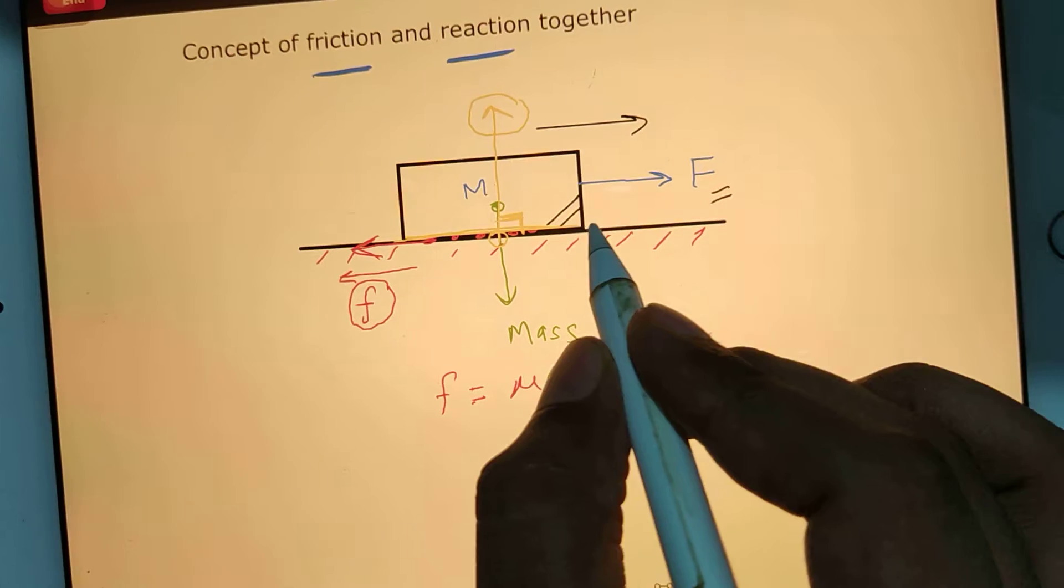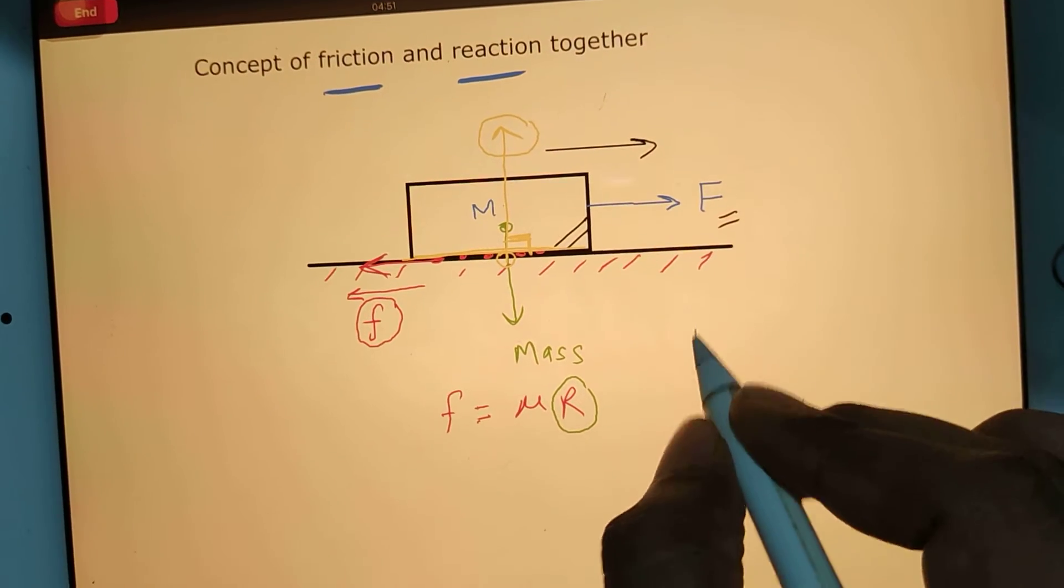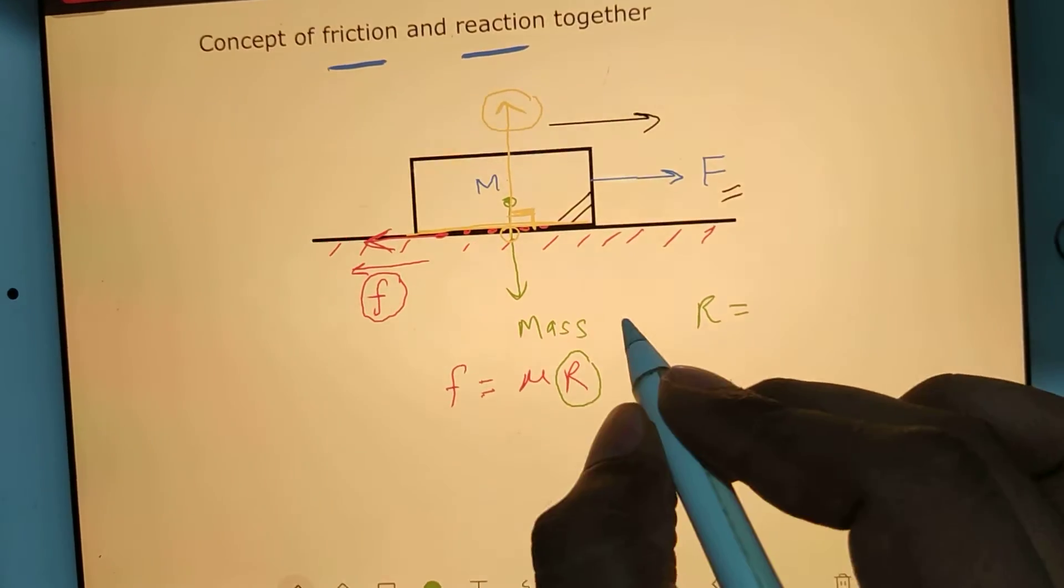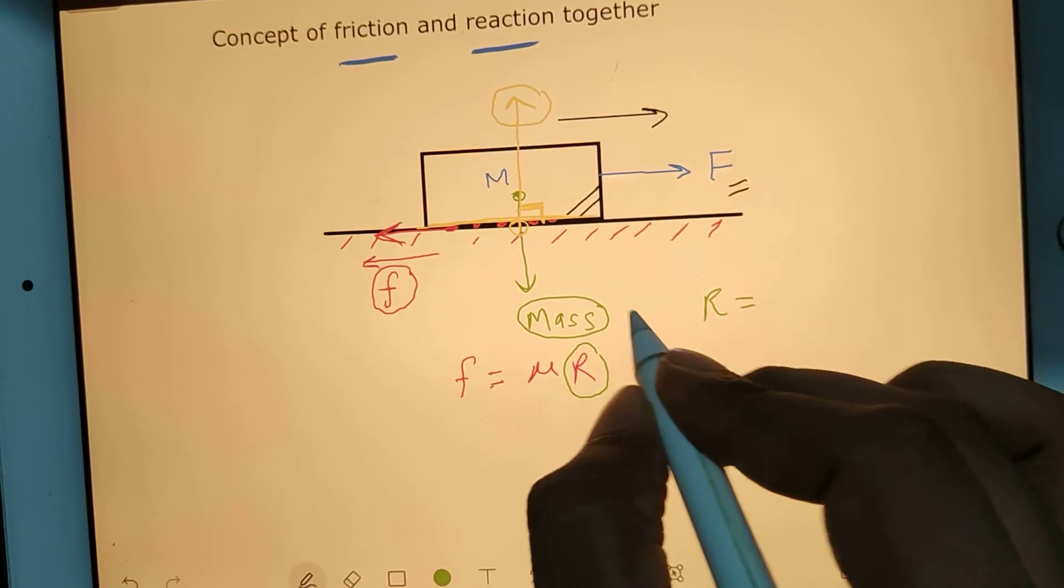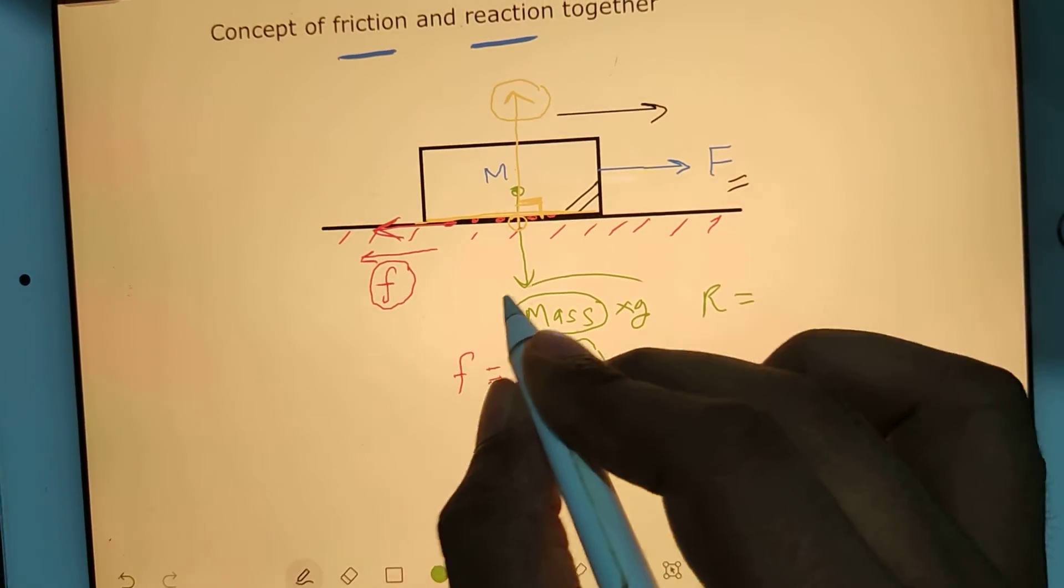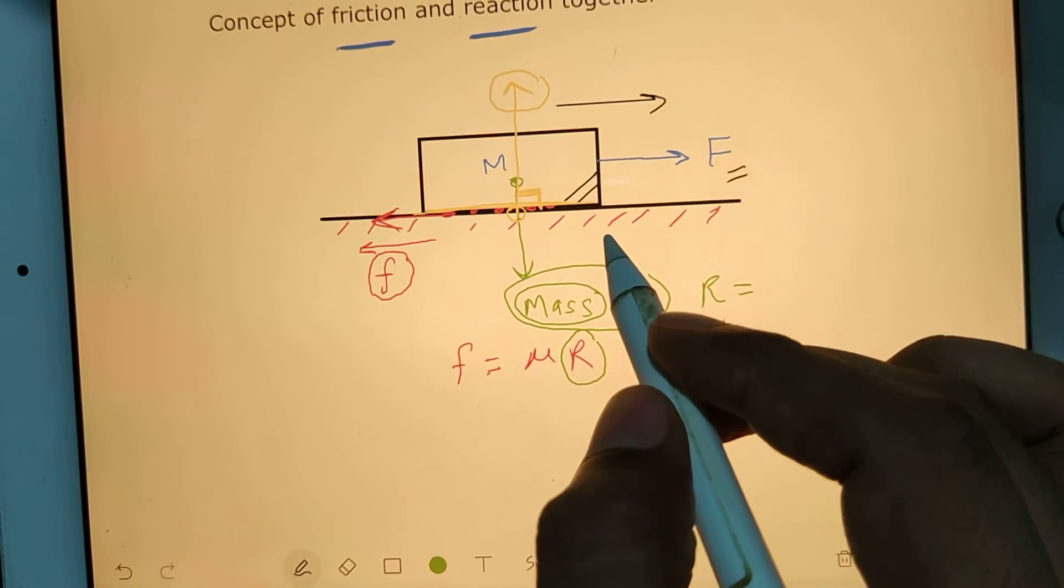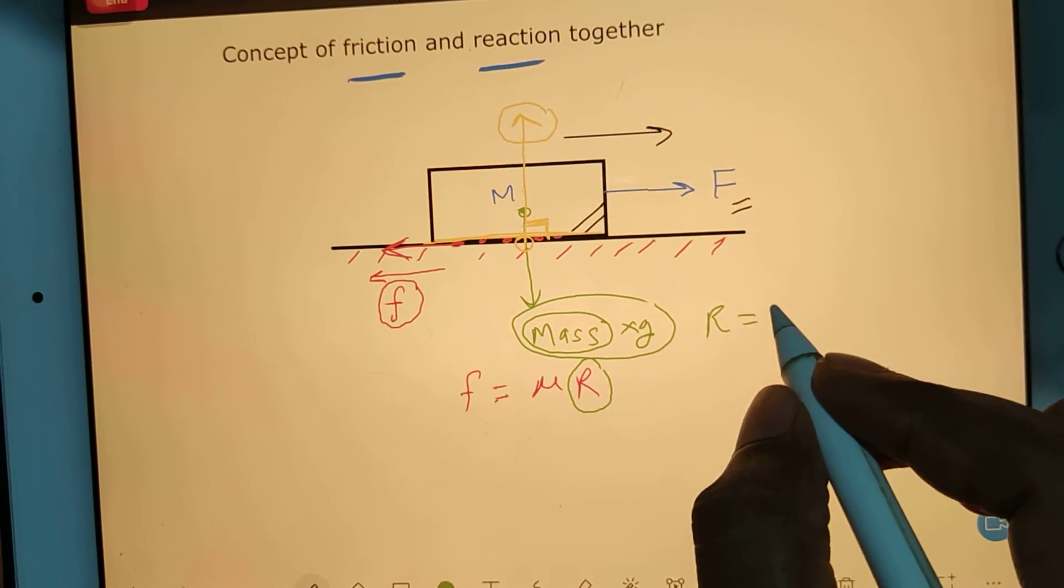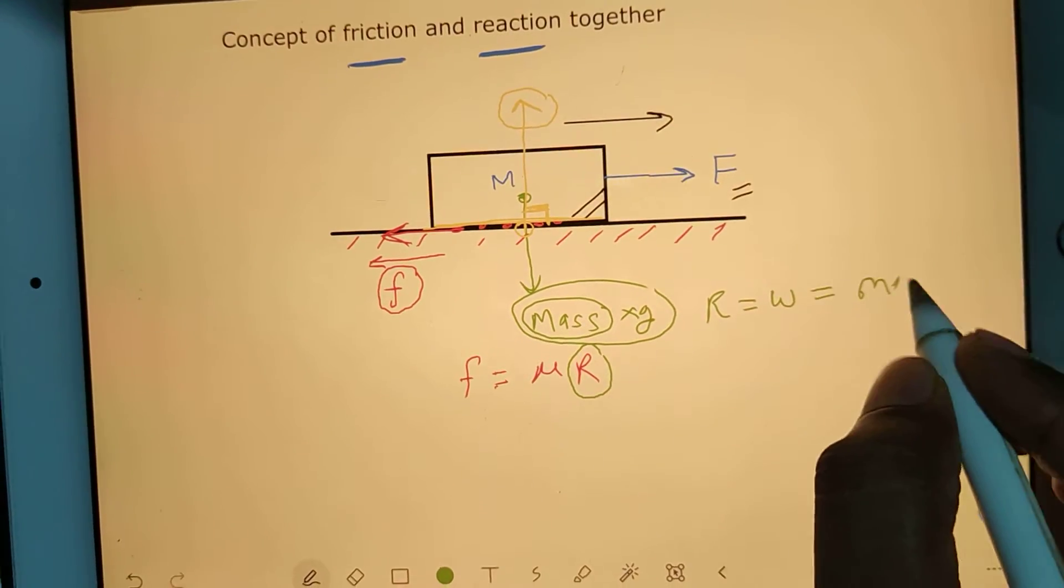If you multiply mass with g, it will be a force - that is nothing but the weight of the block. So this R is equal to the weight of the block, that is nothing but mg.